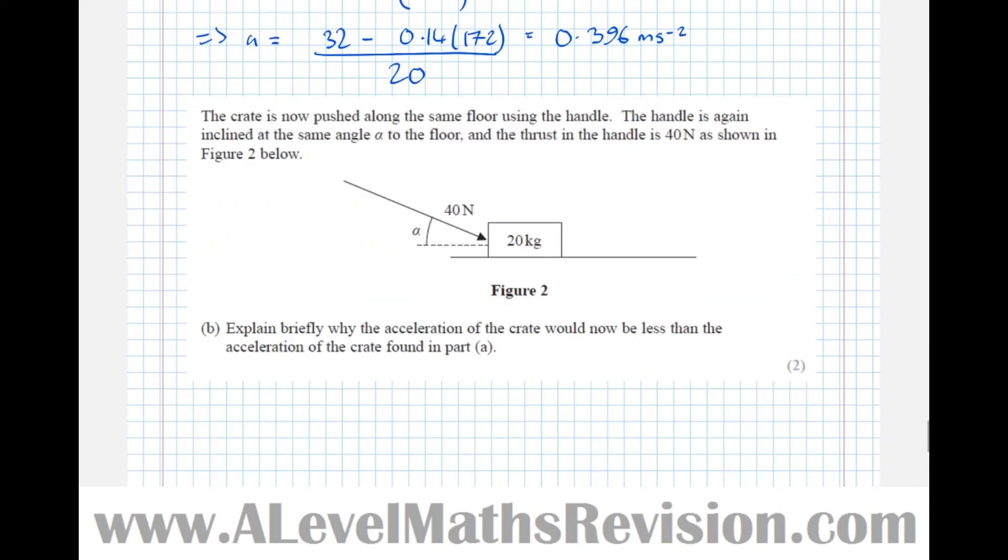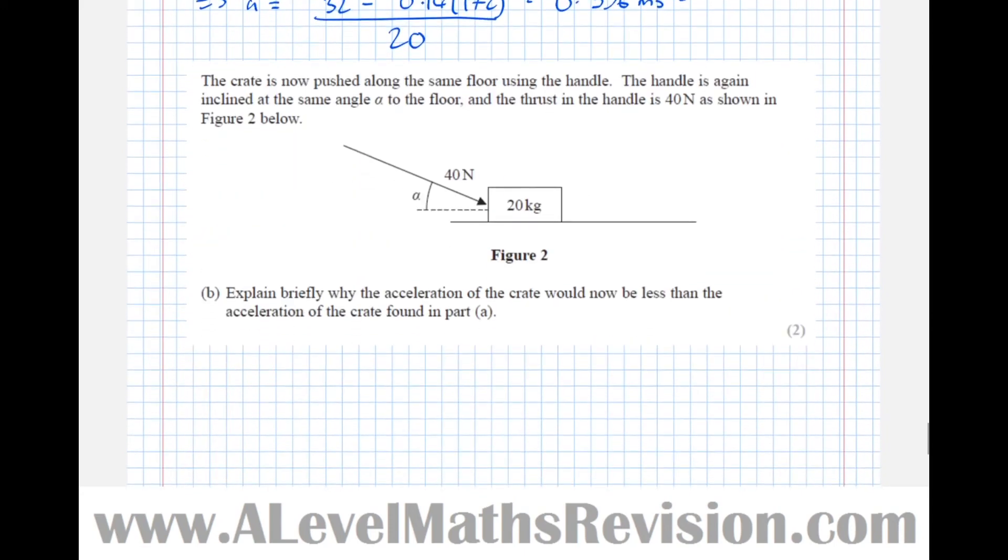So the next part says the crate is now pushed along the same floor using the handle. The handle is again inclined at the same angle and the thrust in the handle is 40 newtons as shown in the figure 2 below. Explain briefly why the acceleration of the crate would now be less than the acceleration of the crate found in part A.